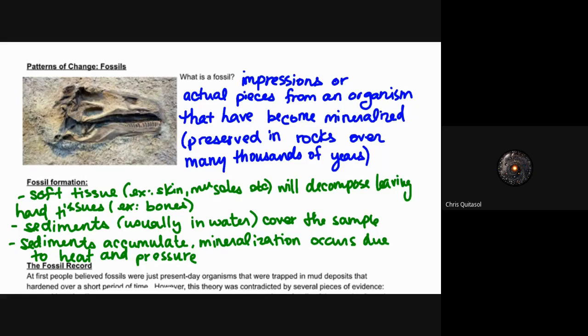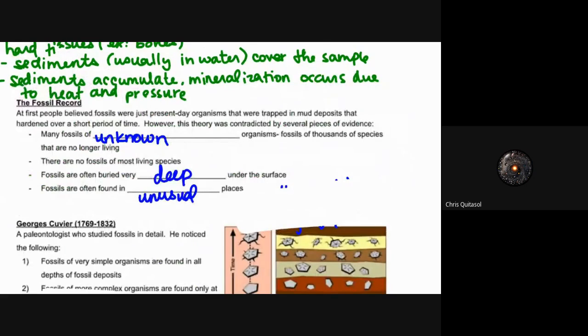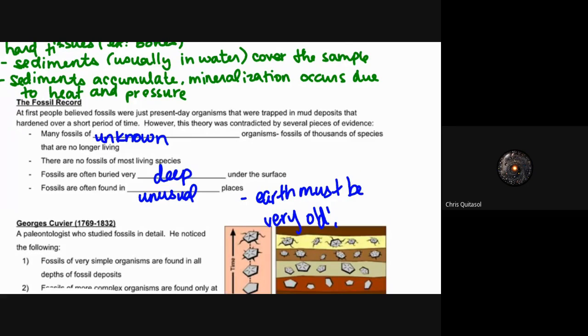The fossil record is utilized in evolution quite often. There are many fossils of unknown organisms, thousands of species that are no longer living, and these fossils are very deep under the surface either through dirt or underneath water and underneath the bottom of lakes and oceans. These fossils are often found in unusual places, and the reason being is that the earth is very old and it looked very different tens of thousands, tens of millions, even hundreds of millions of years ago. That different look allowed for fossils to be found in really weird places, and I'll talk about that as we move through this unit as well.